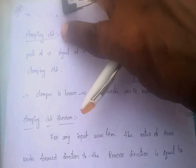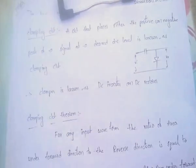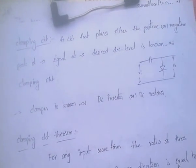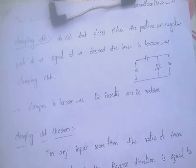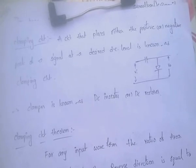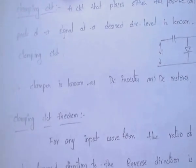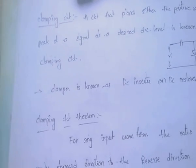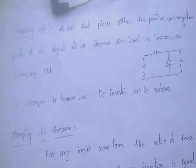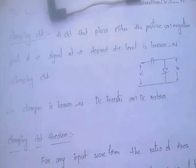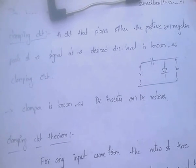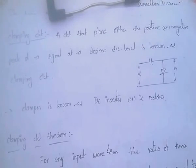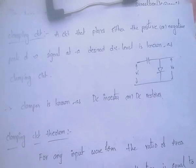Clamping circuit: a circuit that places either the positive or negative peak of a signal at a desired DC level is known as a clamping circuit.